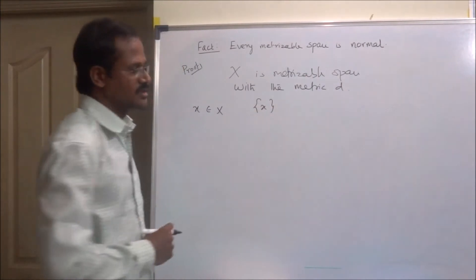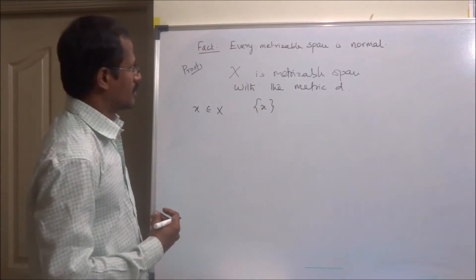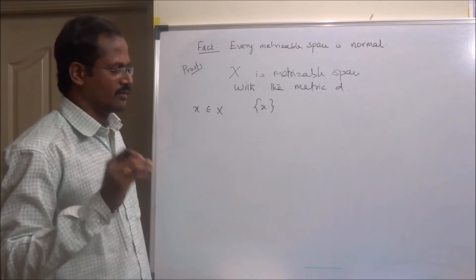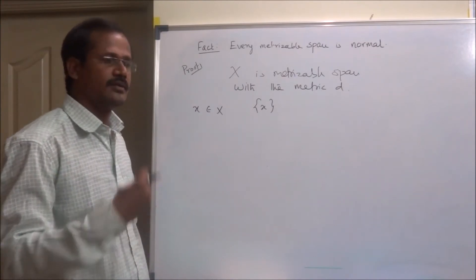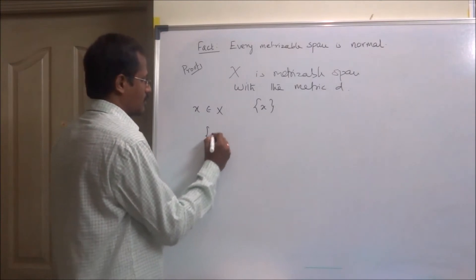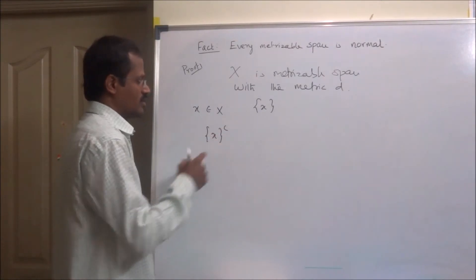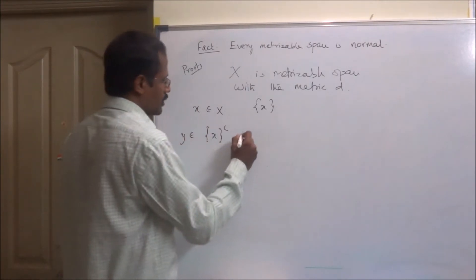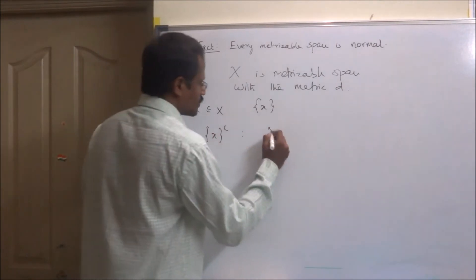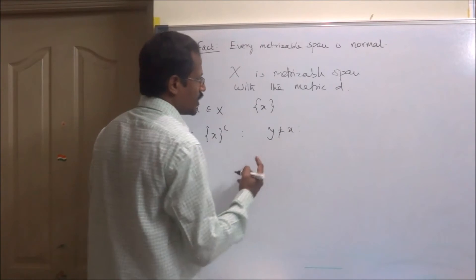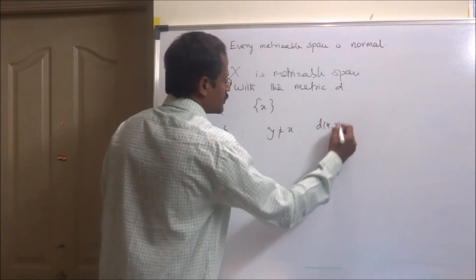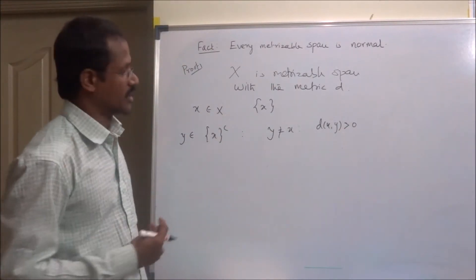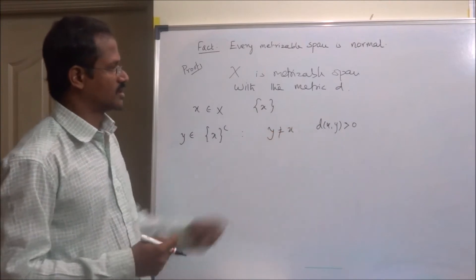Our aim is to prove that the singleton {x} is closed in X. We shall verify that its complement is open. We prove that the complement of singleton {x} is open in X. Consider an arbitrary point y in {x}^c. Because y is in the complement of this set, y will not be equal to x. Therefore, d(x, y) is positive — we have two distinct points, so their distance is positive.